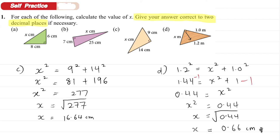That is the Pythagorean theorem — very straightforward. The tricky part is in questions like B and D, where you need to rearrange because the hypotenuse is already given and you are finding one of the other sides.